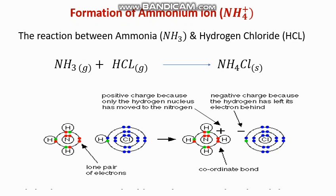In NH₄⁺ we can see a positive charge because only the hydrogen nucleus is transferred from the chlorine to nitrogen. The hydrogen electron, represented in green color, is left behind on the chlorine to form a negative chloride ion.